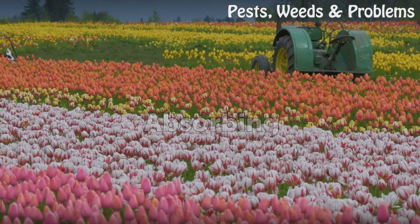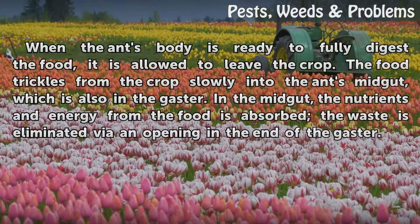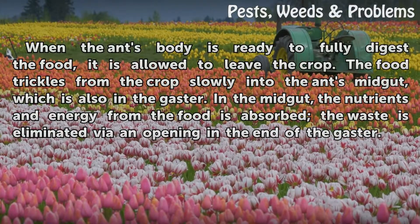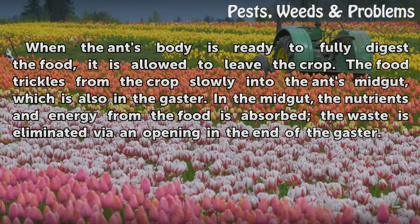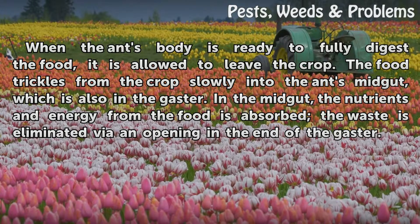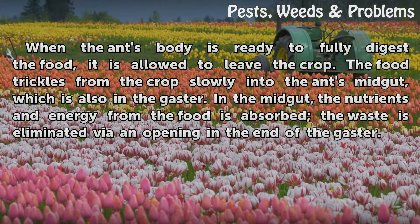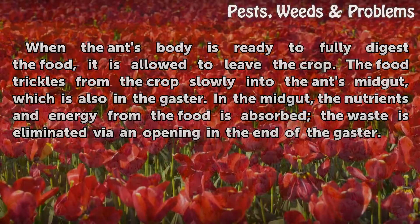Absorbing: When the ant's body is ready to fully digest the food, it is allowed to leave the crop. The food trickles from the crop slowly into the ant's midgut, which is also in the gaster. In the midgut, the nutrients and energy from the food are absorbed. The waste is eliminated via an opening in the end of the gaster.